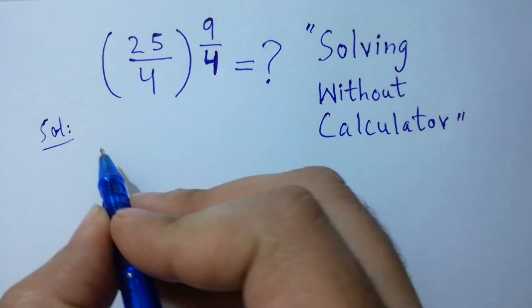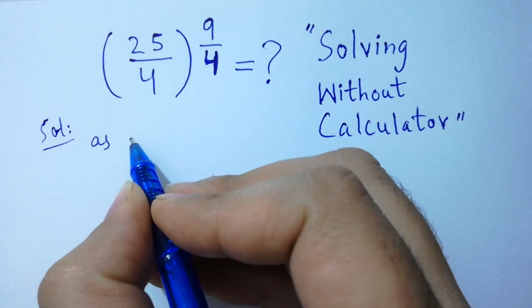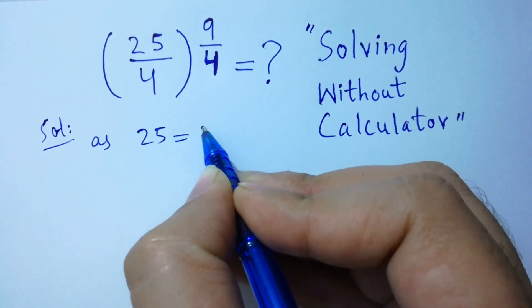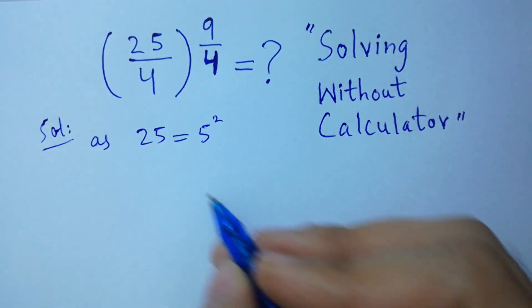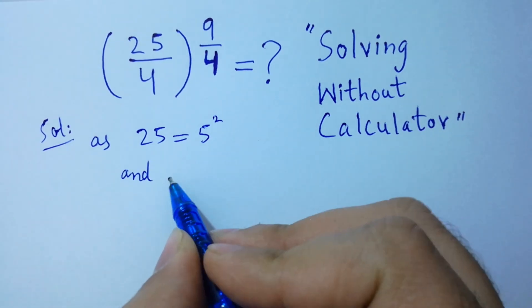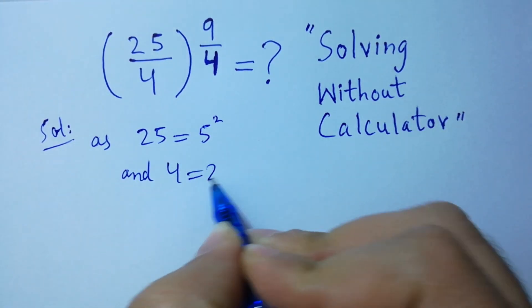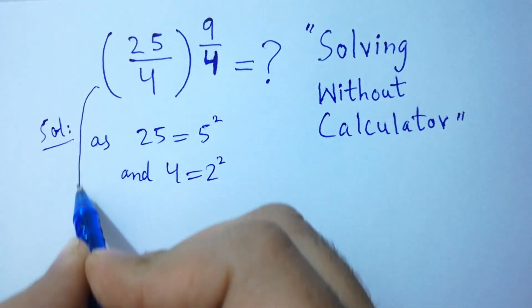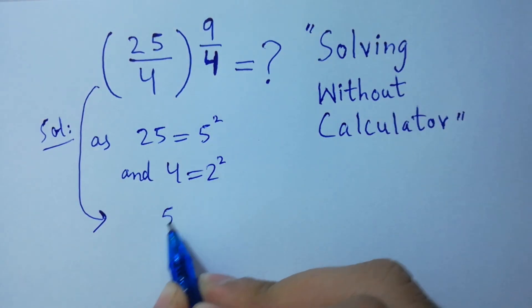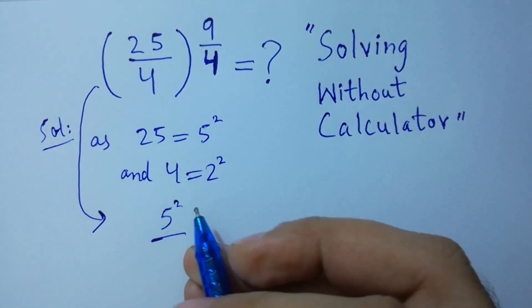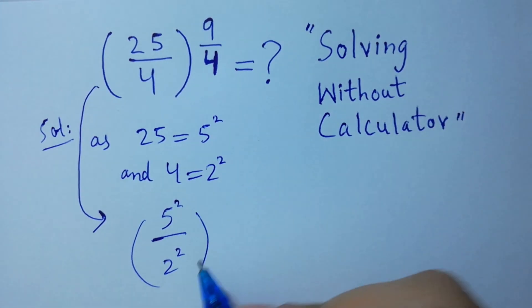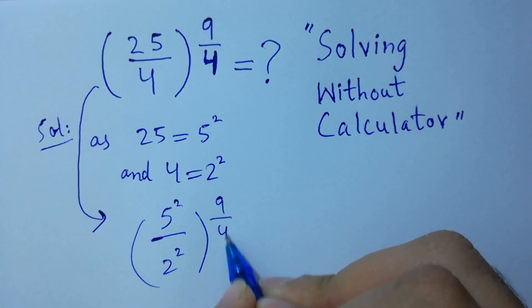As we know, 25 equals 5 squared and 4 equals 2 squared. So it will be 5 squared over 2 squared, to the whole power 9 over 4.